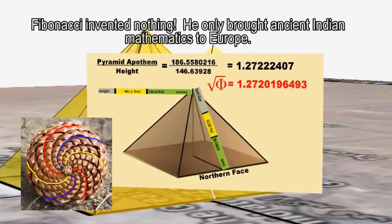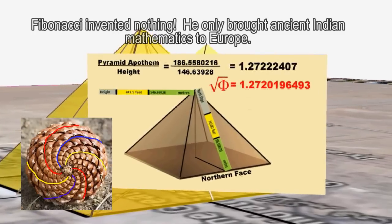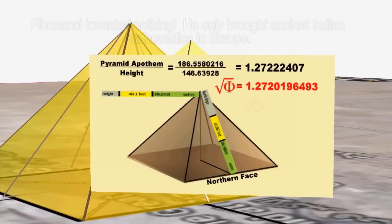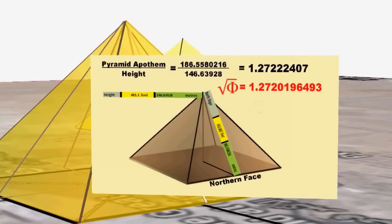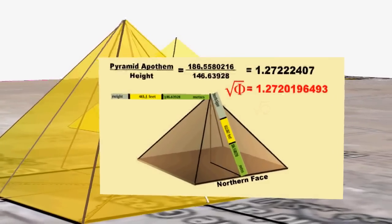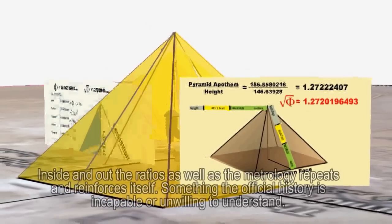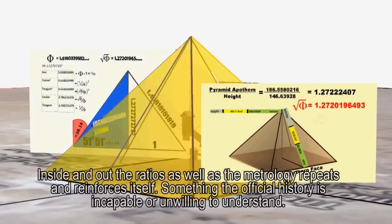Now, as much fun as it is to discover these patterns, it's even more satisfying to understand why they are true. Let's look at that last equation. Why should the squares of one, one, two, three, five, and eight add up to eight times thirteen? I'll show you by drawing a simple picture.